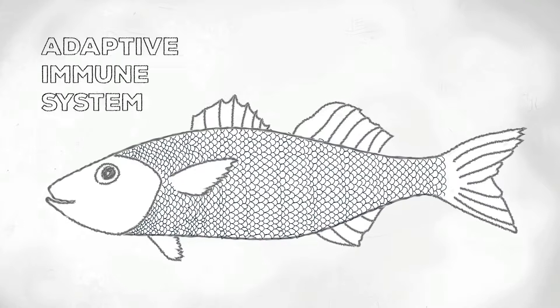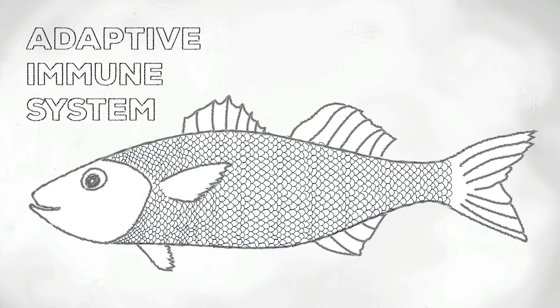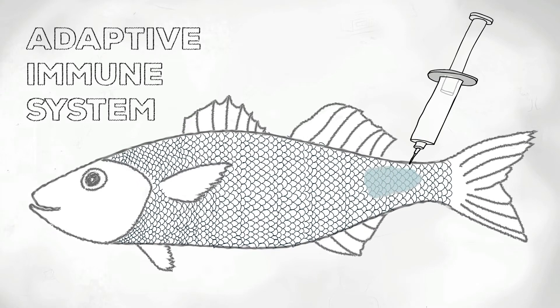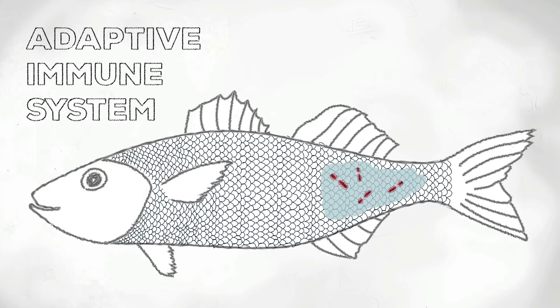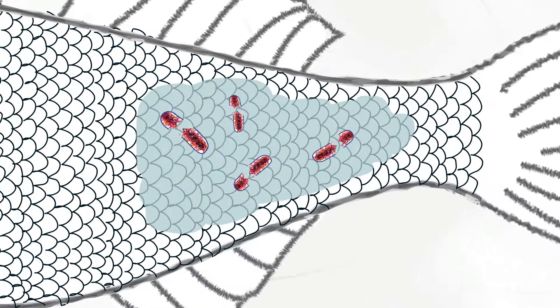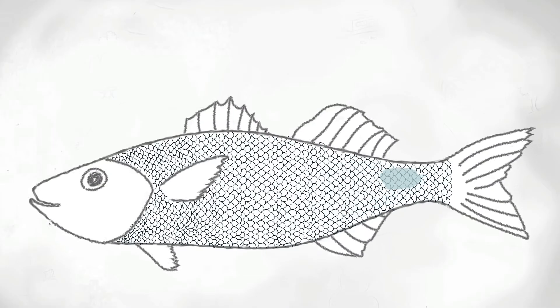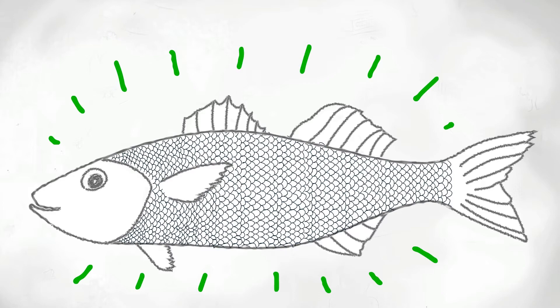Vaccination takes advantage of the existence of an adaptive immune system. Thus, by exposing the fish to inactivated pathogens or small parts of pathogens, vaccines train the immune system so it is prepared to respond quickly and strongly to a specific pathogen.